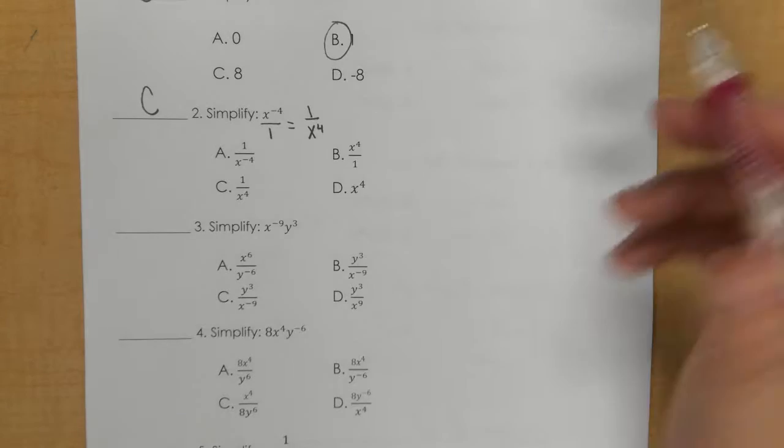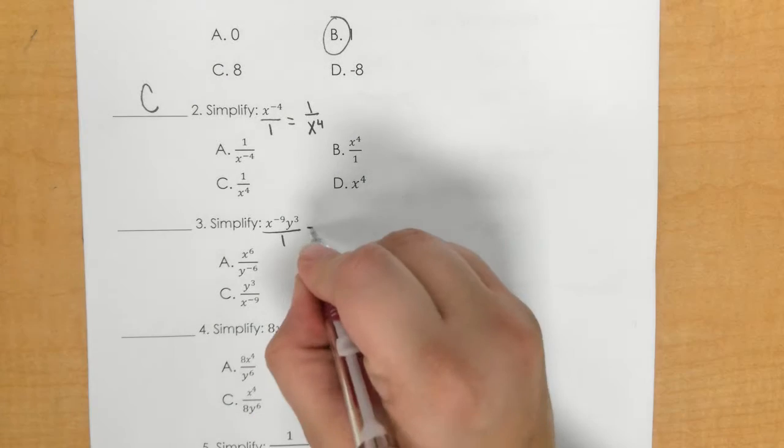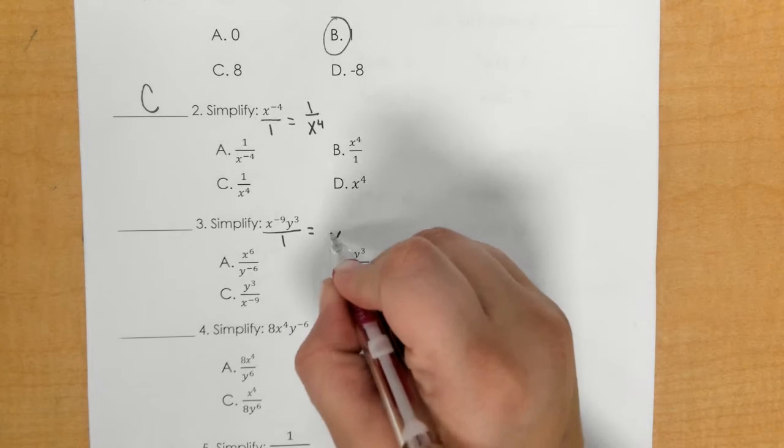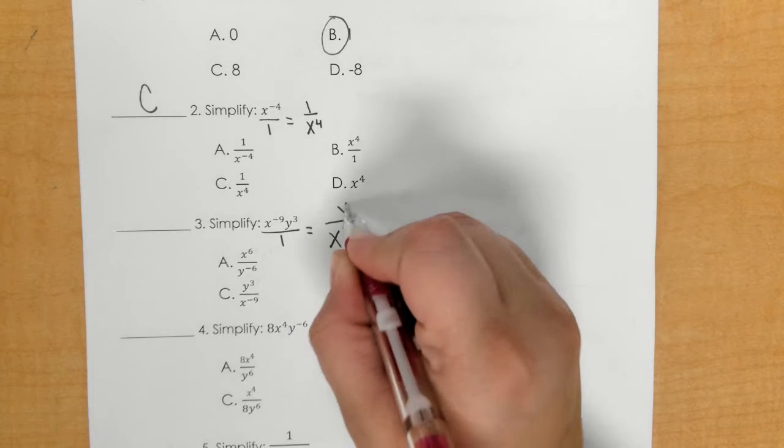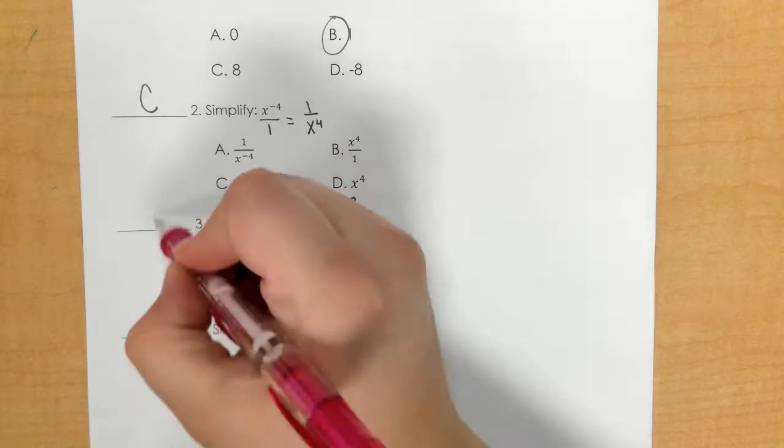For number 3, I see that I have a negative exponent, so I put this over 1. I need to bring down the x only and keep the y at the top. So I'm looking for y³, x to the positive 9, so that would be D.